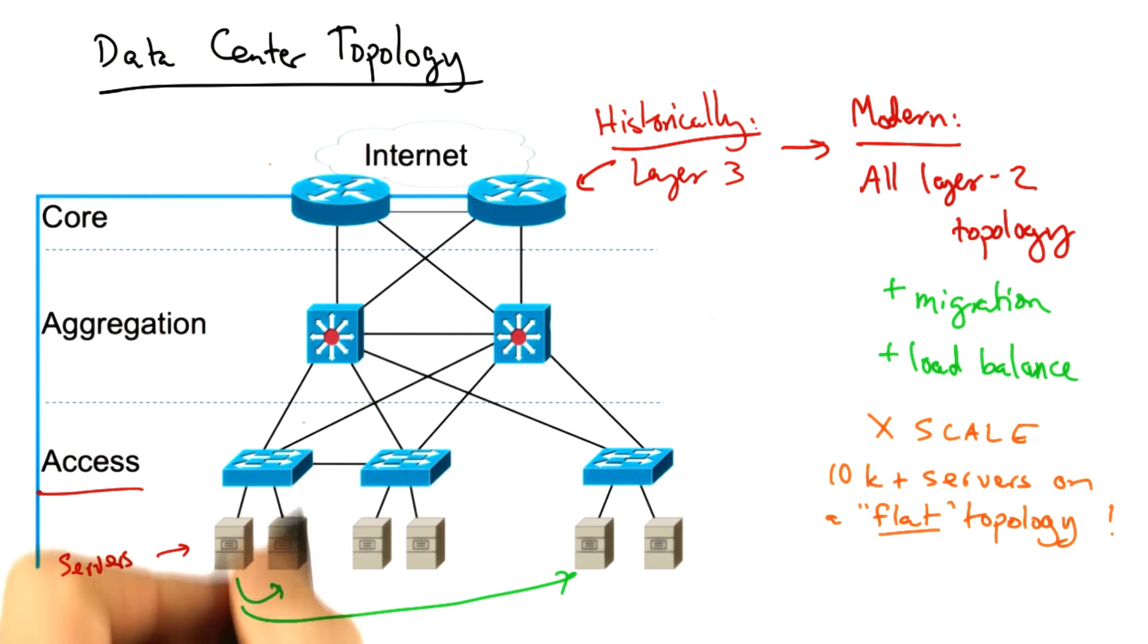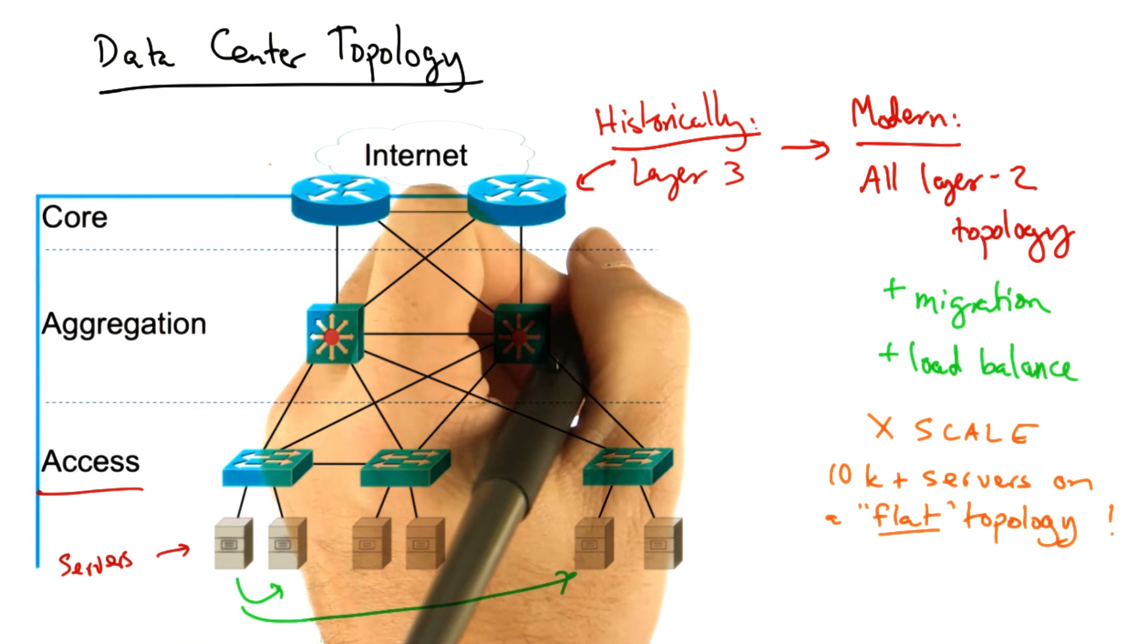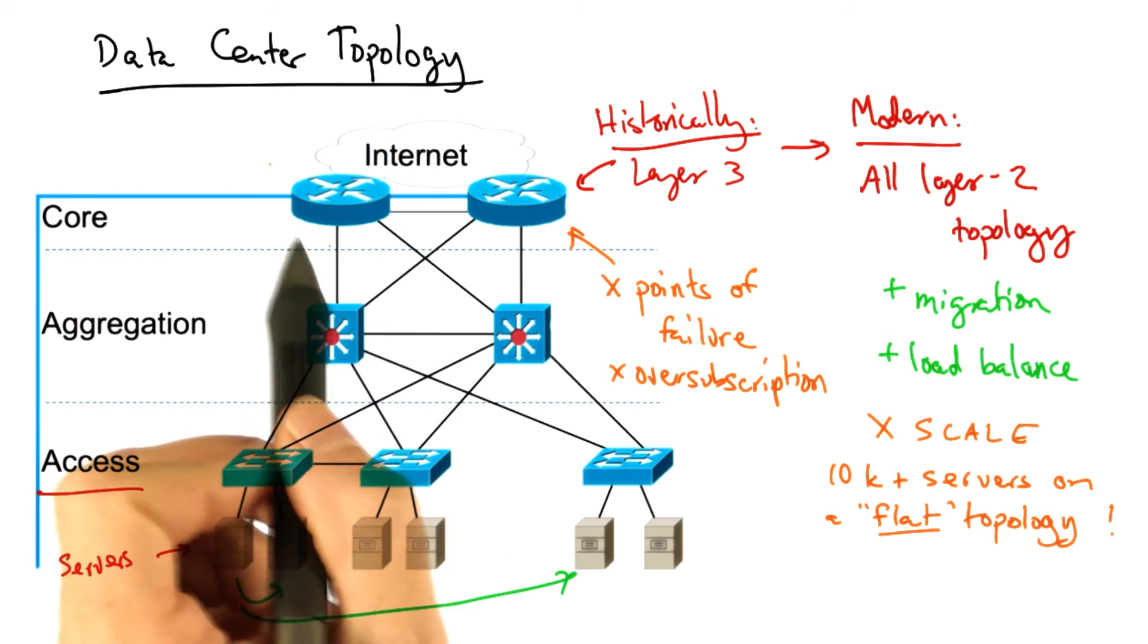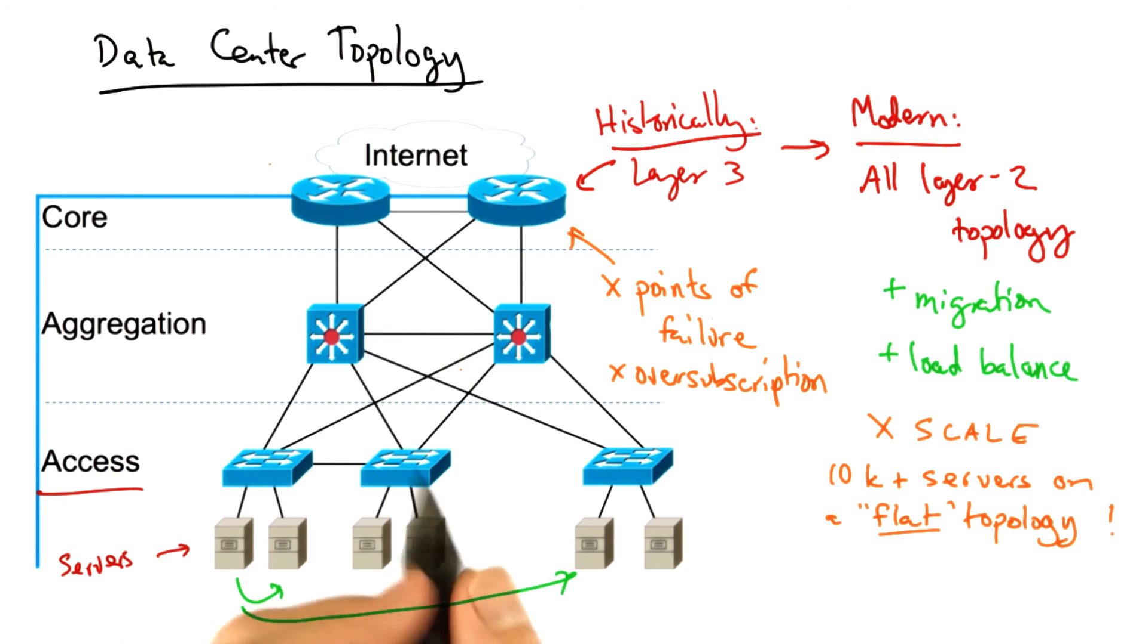Other problems that exist in this type of topology is that the hierarchy can potentially create single points of failure, and links at the top of the topology, in the core, can become oversubscribed.